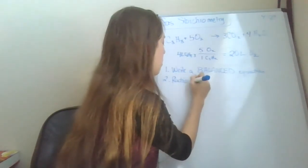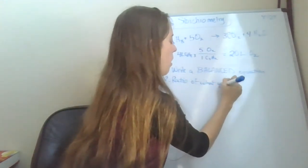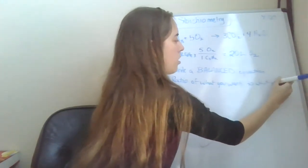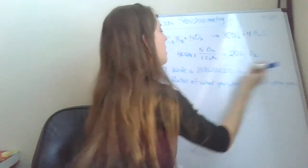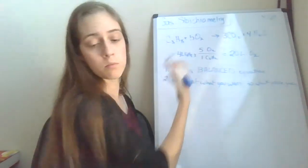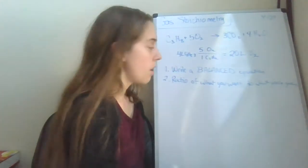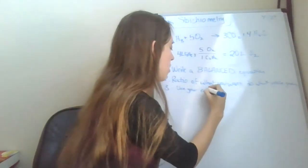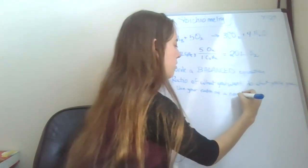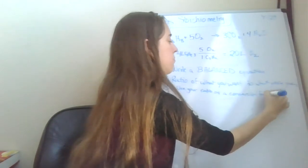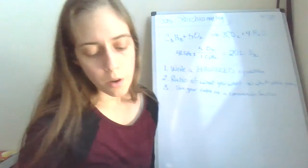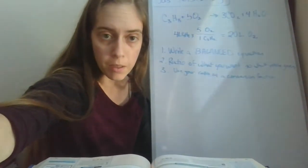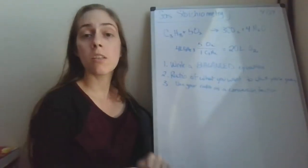Step 2, figure out the ratio of what you want, what the problem is asking for, to what you're given. In this case, we wanted oxygen and we were given propane. And then step 3, use your ratio as a conversion factor. Multiply. 4 times 5, that's all it is. For those first 3 on your JunoPod, all it is is just these conversions. You just write the balanced equation, figure out your conversion.